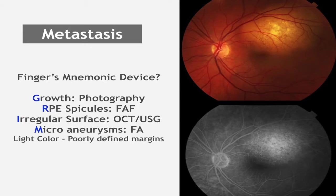In terms of metastasis, the mnemonic is GRIM: Growth, best seen by comparative photography; RPE spicules, best seen by fundus autofluorescent imaging; Irregular surface, best seen by OCT or ultrasound if large enough; and Microaneurysms, best seen on fluorescein angiography. The light color and poorly defined margins are also helpful.